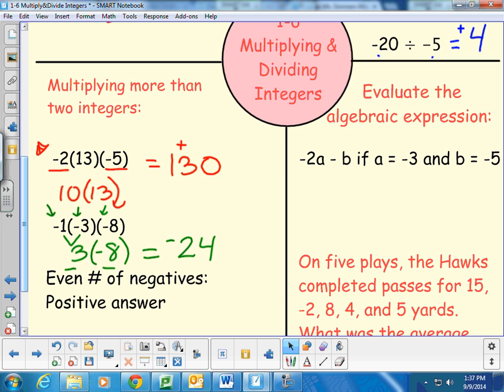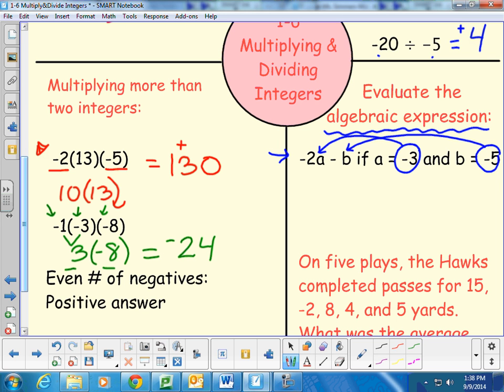Looking at evaluating the expression. Okay? Remember evaluating the expression. What they say here is negative 2a minus b if a equals negative 3 and b equals negative 5. So if you recall from lesson 1-2, what they want us to do is substitute in the values of a and the value for b. So I would rewrite this in my notebook so I know what I started with. I would rewrite the sentence and then show filling it in. So negative 2 times a, which is negative 3, minus b, I fill in the whole thing, which is negative 5.